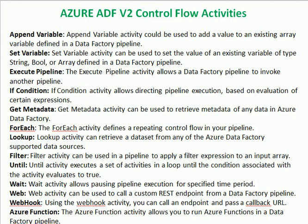The major one is variables. If you want to pass some value at runtime, pass values dynamically, or use static values, we can use these variables. There are two types: append variable and set variable. Append variable is used when you want to add a value to an existing variable.